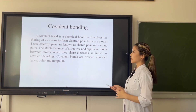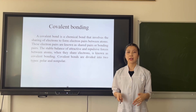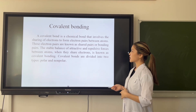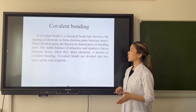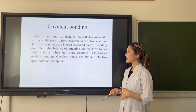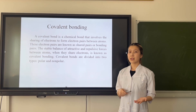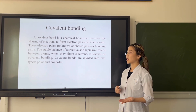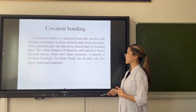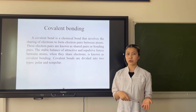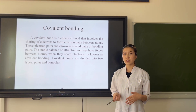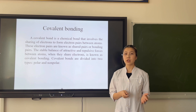The next is covalent bonding. A covalent bond is a chemical bond that involves the sharing of electrons between atoms. These electron pairs are known as shared pairs or bonding pairs. The stable balance of attractive and repulsive forces between atoms when they share electrons is known as covalent bonding. A covalent bond is divided into two types: a non-polar bond and a polar bond.